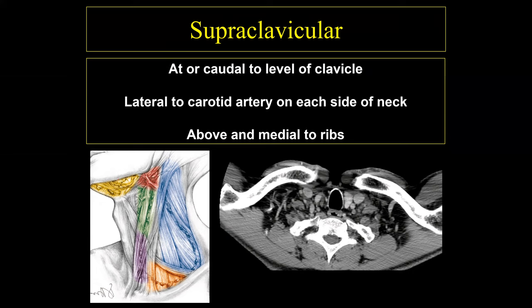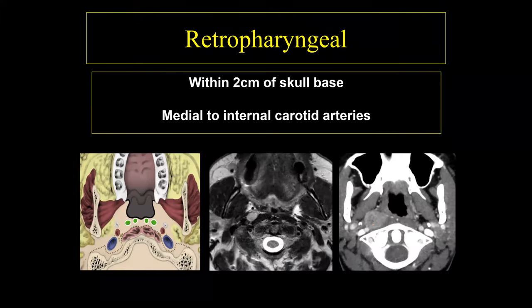The supraclavicular lymph nodes connect the anterior and posterior chains. On axial images, any lymph nodes visible at the level of the clavicle are considered supraclavicular. While most lymph nodes drain head and neck cancers, isolated supraclavicular involvement should prompt consideration of tumors below the clavicle: breast cancer, lung cancer, GI cancer, and also Hodgkin's disease, since lymphoma can involve these nodes as well.